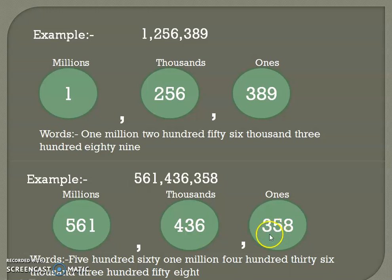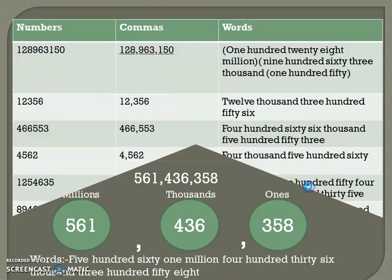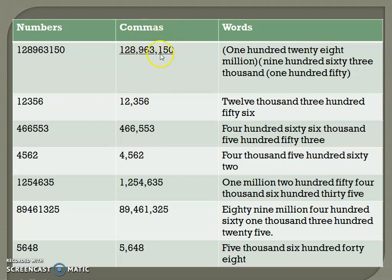I hope you are all very clear with the concept: you have to start putting commas from the right-hand side, before every three numbers. Let's see a few more examples. These are the numbers given here, divided into periods. This number has nine digits and is divided into three periods: ones period, thousands period, and millions period.